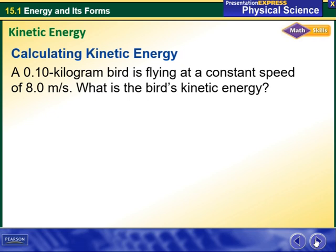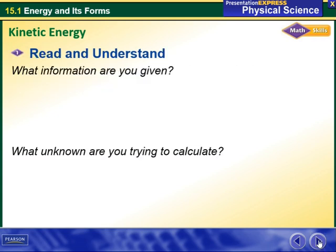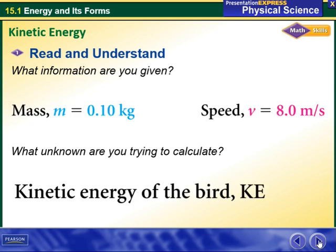Let's calculate kinetic energy with this example. A 0.10 kilogram bird is flying at a constant speed of 8 meters per second. What is the bird's kinetic energy? First, we identify the given information: mass (m) is 0.10 kilograms, and speed (v) is 8 meters per second.